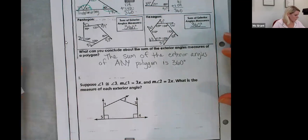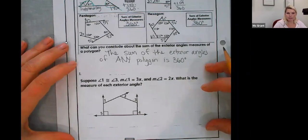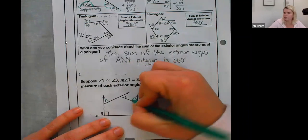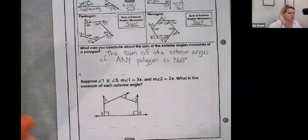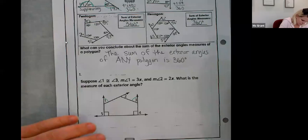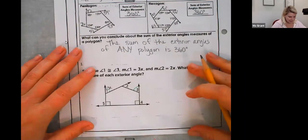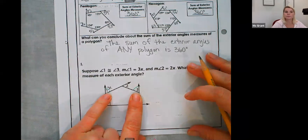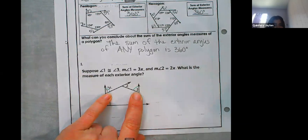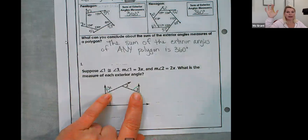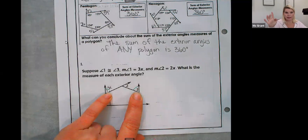All right, number one. Suppose that angle one is congruent to angle three, and angle one is 3x. Well guys, if angle one is 3x, how big is angle three? Someone, if angle one is 3x, how big is angle three? We're just raising hands. Can someone virtually raise their hand and say it again? Logan, thanks. 3x.